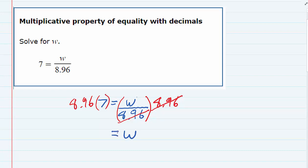And then on the left-hand side, nothing's canceling, so we just have to multiply those two numbers, and that gives us 62.72.